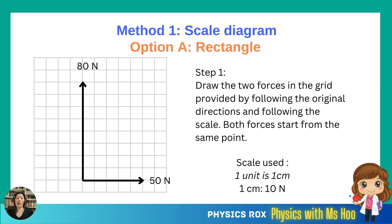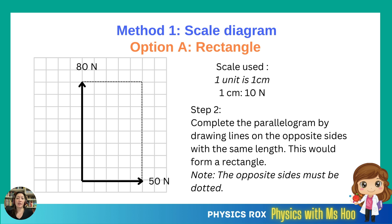The rectangle method requires both forces to start from the same point, as you can see in the diagram here on the left. So for 50 N, you would need to draw an arrow to the right that is 5 cm long. For the 80 N force, because it's acting upwards, you would need to draw an arrow pointing upwards that's 8 cm long. For the rectangle method, you would need to complete the parallelogram — which in this case is a rectangle — by drawing lines on the opposite sides with the same length. This would then form a rectangle.